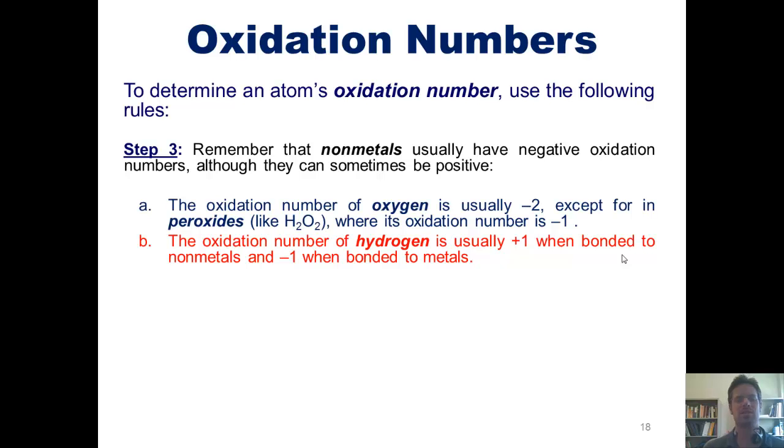The oxidation number of hydrogen is almost always +1 when it's bonded to non-metals, and -1 when it's bonded to metals.